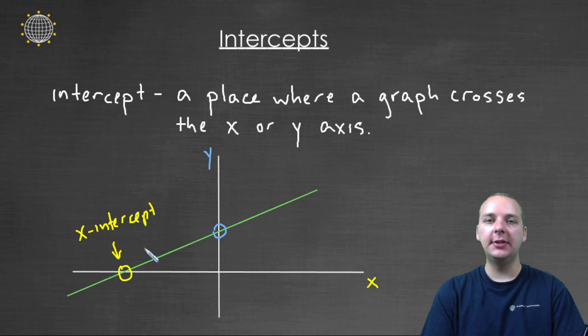And again, an x-intercept is any place where the graph crosses over the x-axis. And likewise, this place right here will be called a y-intercept.